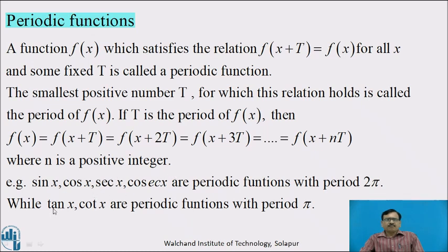For example, sin x, cos x, sec x, cosec x are periodic functions with period 2π, while tan x and cot x are periodic functions with period π.